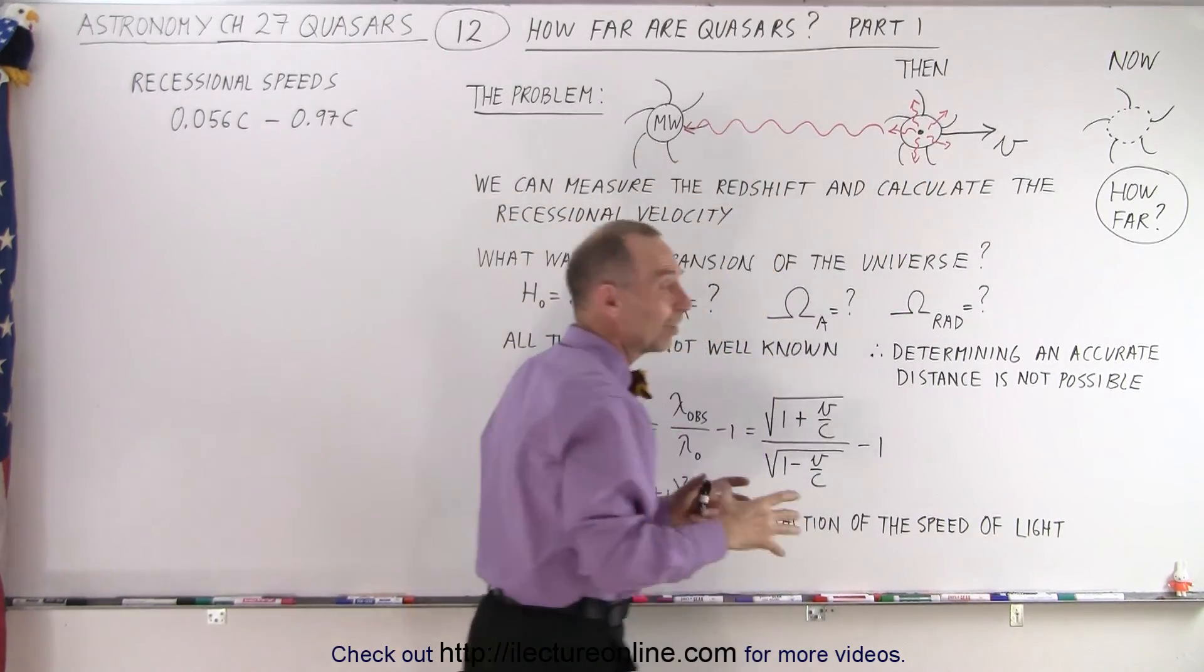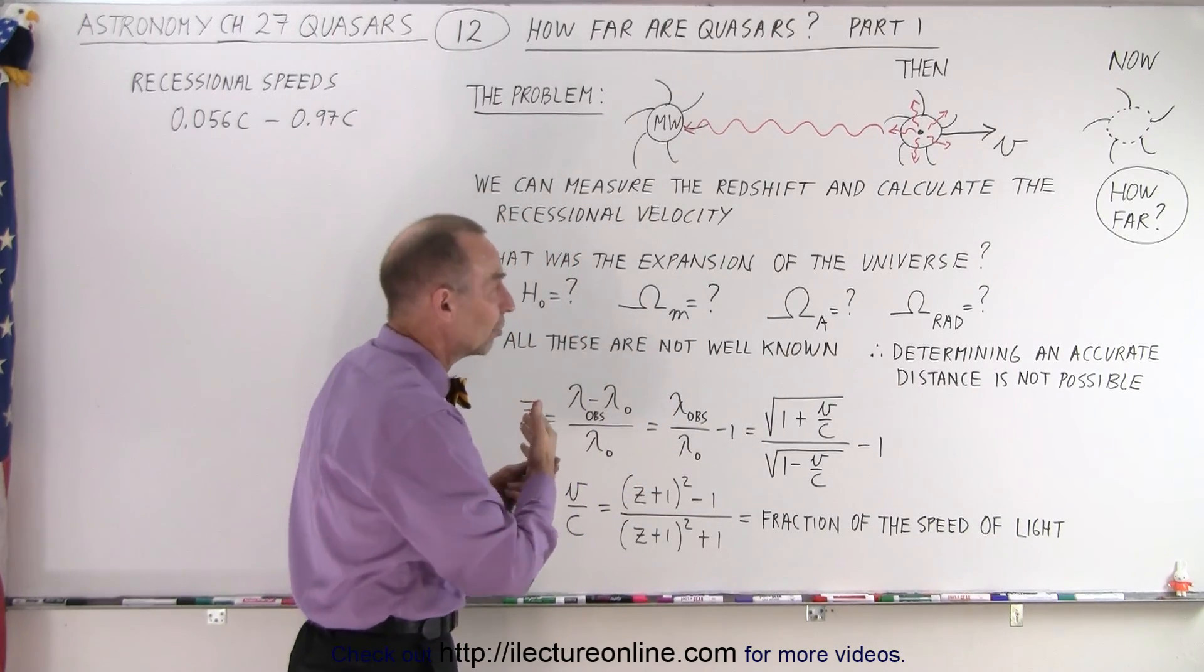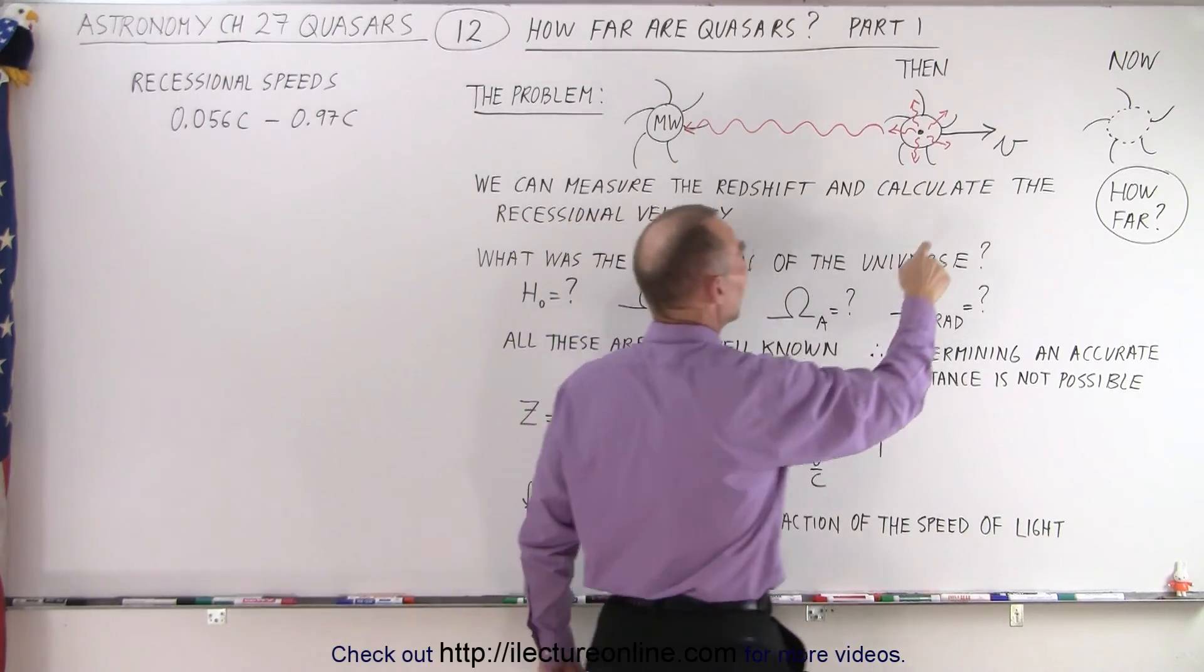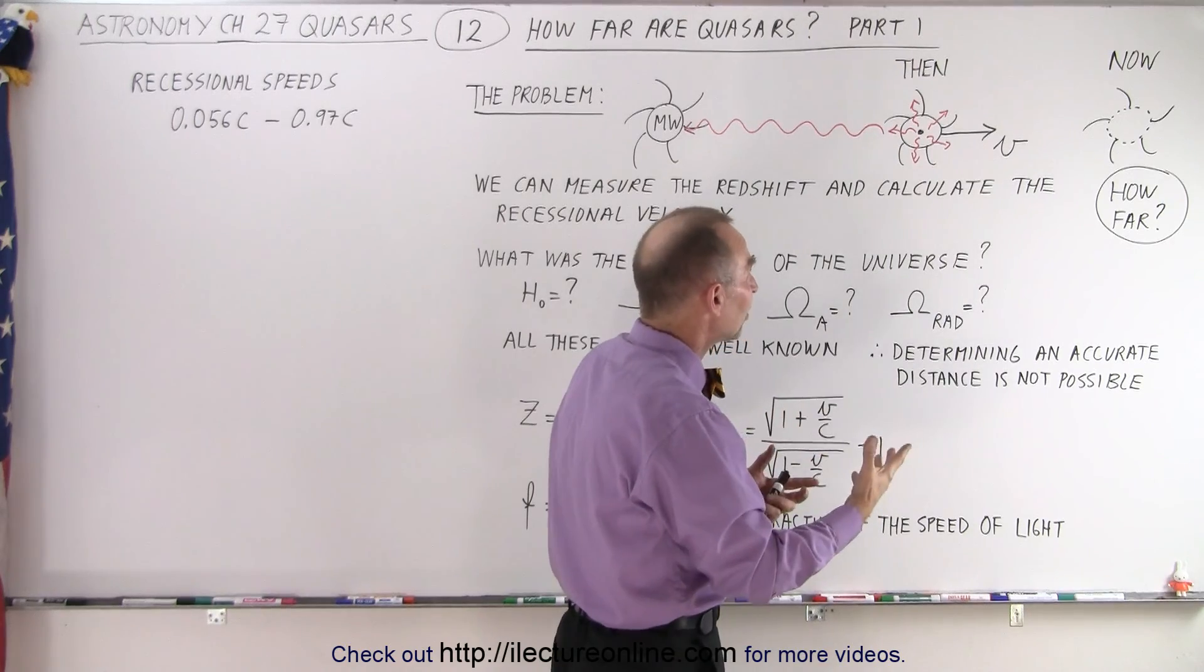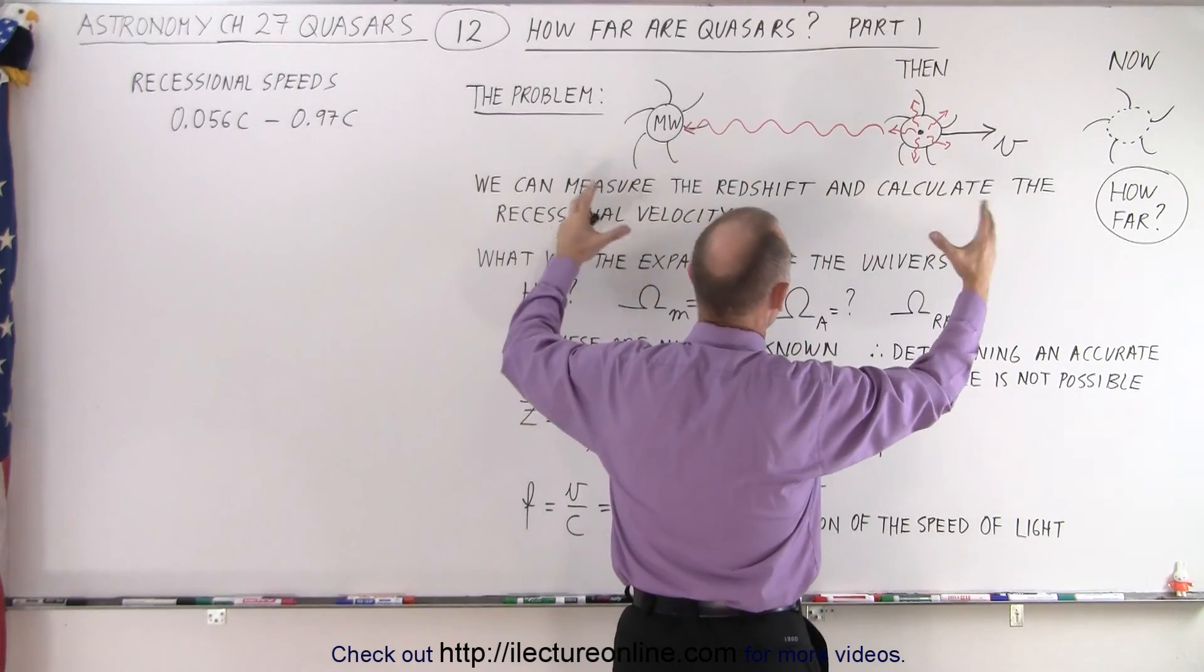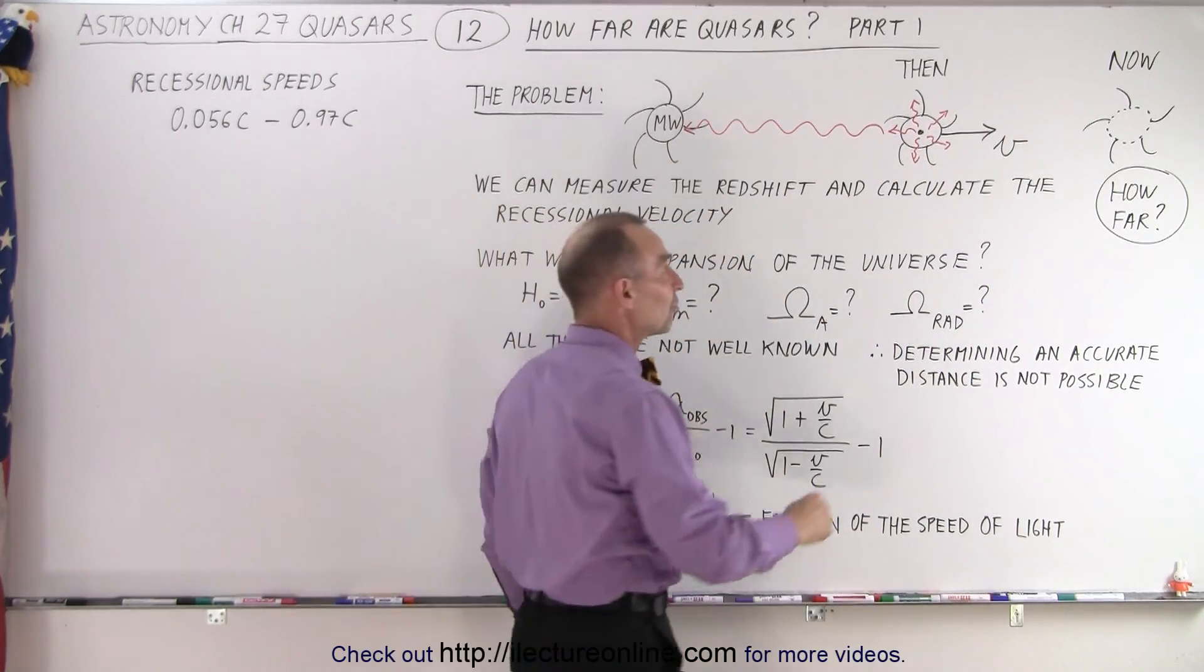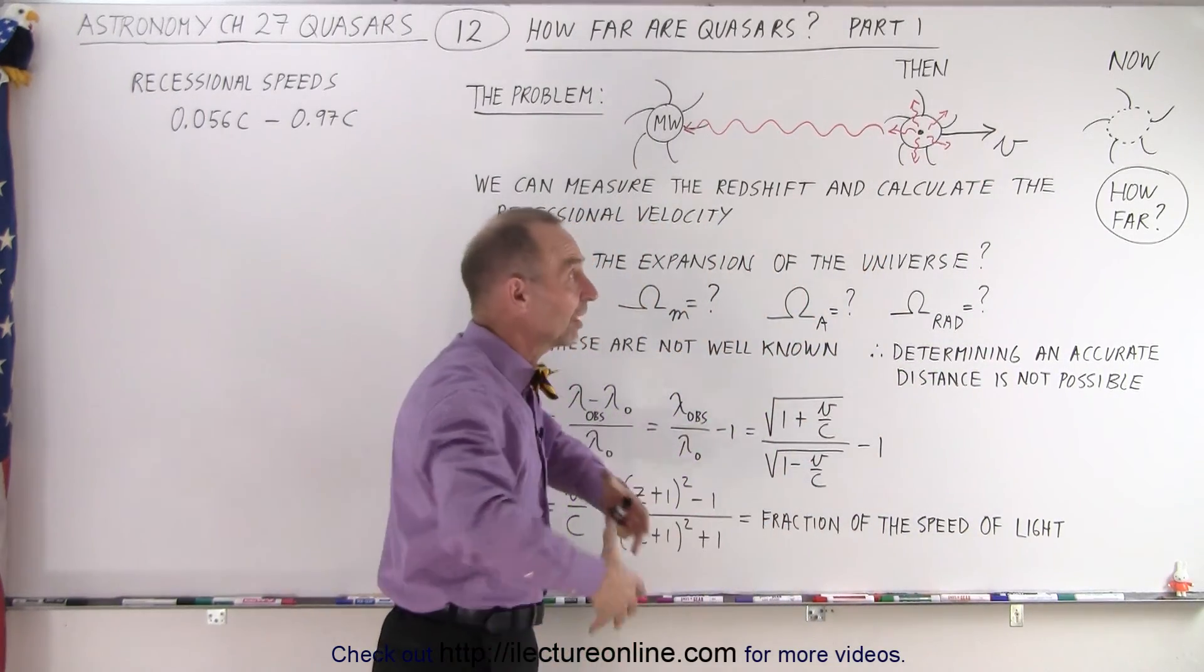We can then calculate the recessional velocity by measuring the shift in the light, the Doppler shift in the light, because the object is moving away from us as the light is approaching us. And we can then say that the object will be traveling for billions of years at some recessional velocity. But that velocity is not constant because as the universe is expanding, more and more space is between the objects. This object will travel faster and faster over those billions of years. It's not traveling as fast now as it will in the future as the expansion of the universe is accelerating.